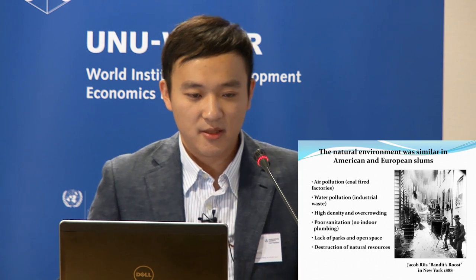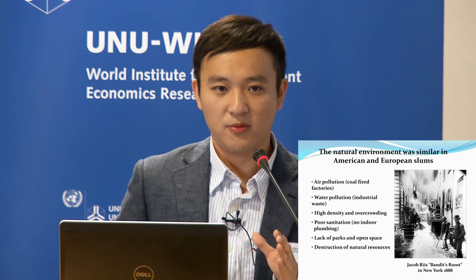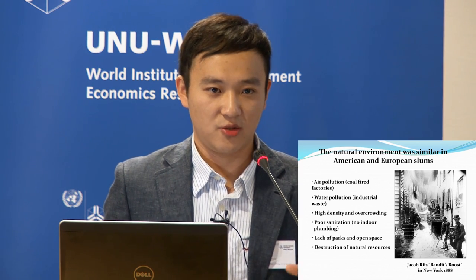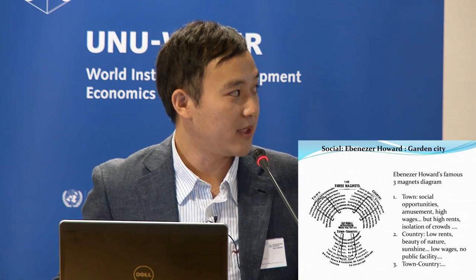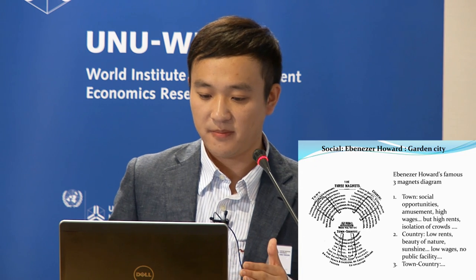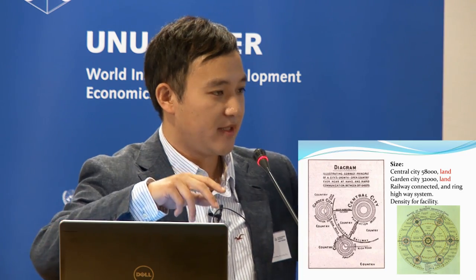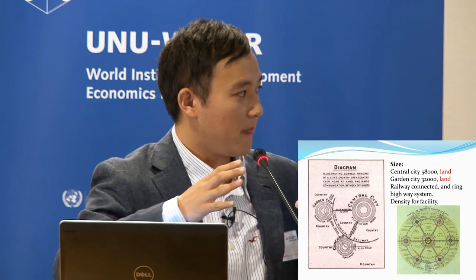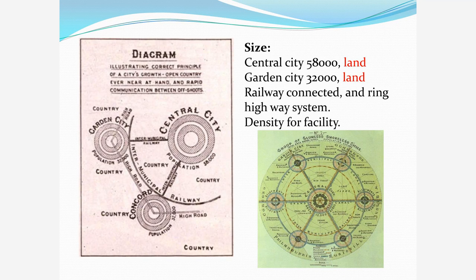We need to resolve the environmental and climate change problems in urban development, and also solve other problems together when thinking about policy. One model is the Garden City, built by Ebenezer Howard, who wanted to combine the advantages of town and countryside. He designed a city model with a central city in the middle, surrounded by six satellite cities connected by a train system, with a railroad connecting the satellites to each other — promoting transportation efficiency and creating green belts along the city.